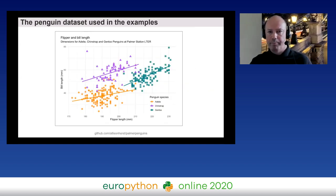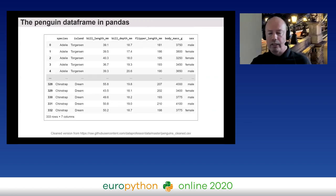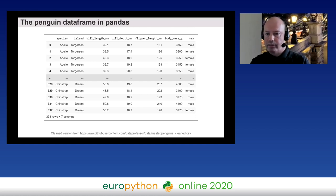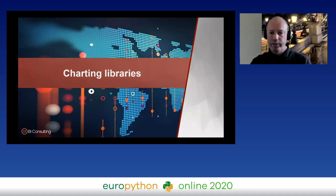The examples in the talk use the Palmer Penguins dataset — a nice and recently released dataset with observations on different penguin species. Loaded into a pandas DataFrame called df, it contains species information, location, measurements, and other categories. This is the dataset from which all example charts will be created.